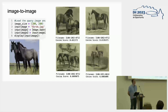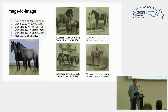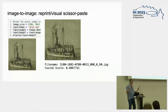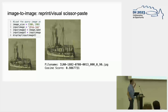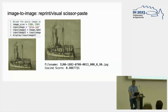We also have an image-to-image retrieval test — we can start not only with a textual query but also with an image query. So here we start with an image of a horse and the model returns illustrations of horses in the dataset. This image-to-image retrieval test is also very useful to study visual reprints. There are lots of projects in digital humanities about textual reprints, but this retrieval test also allows us to study visual reprints, or visual scissor-based practices.